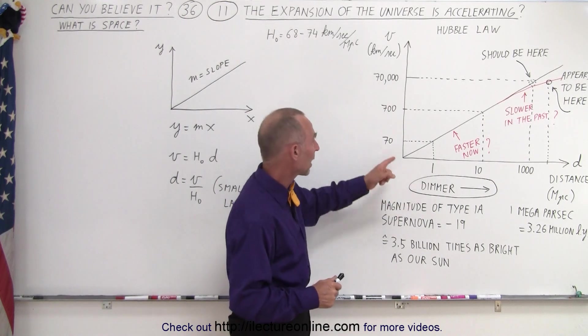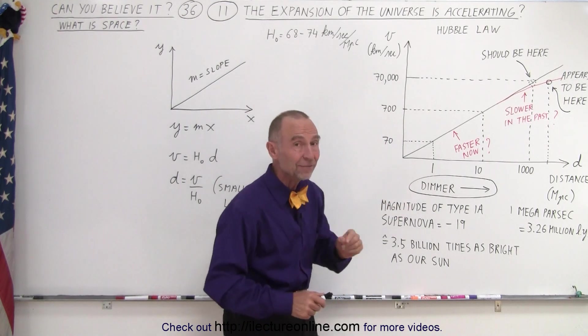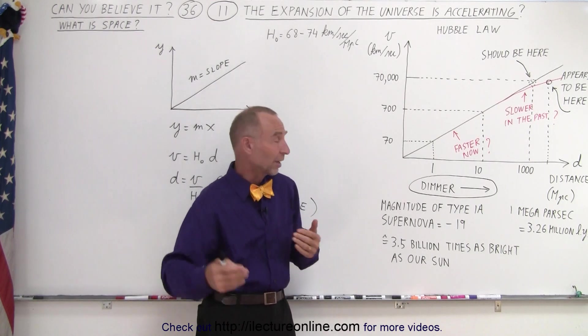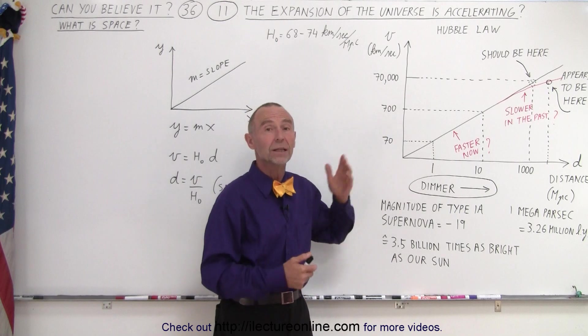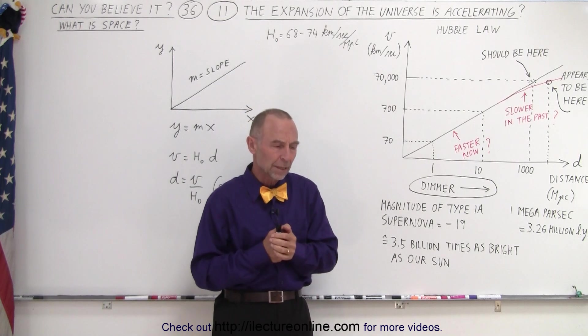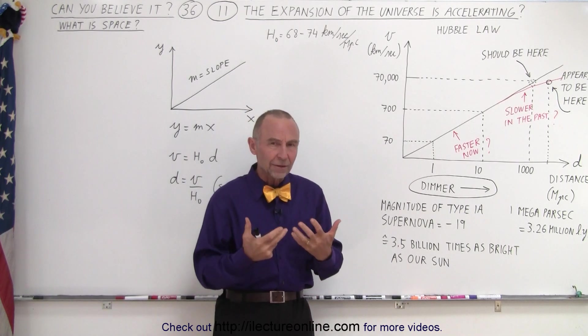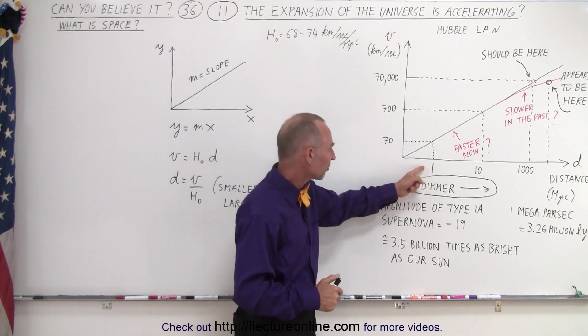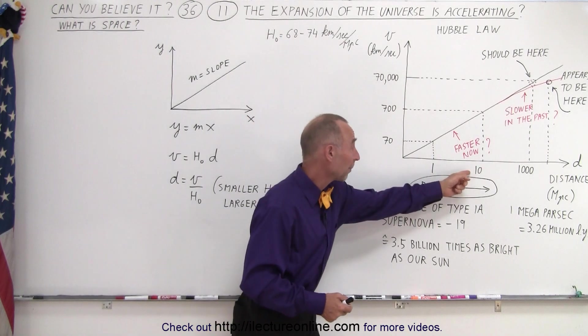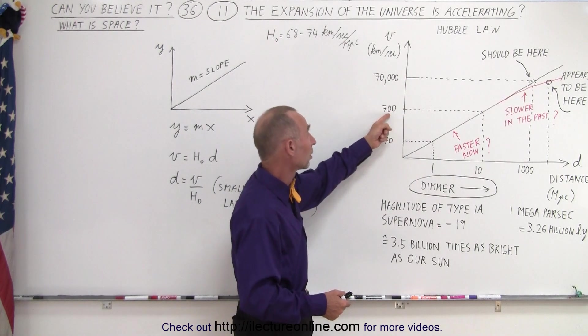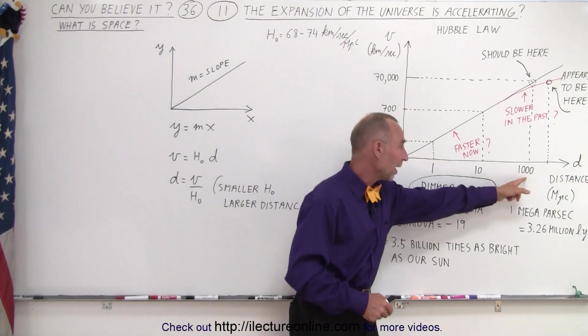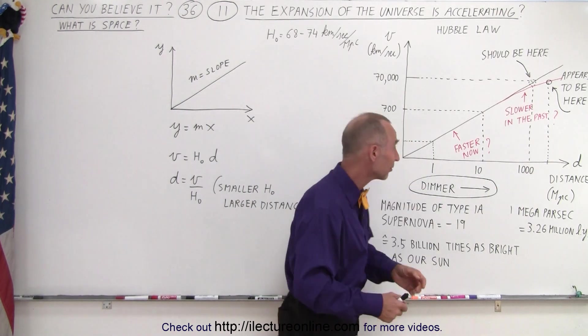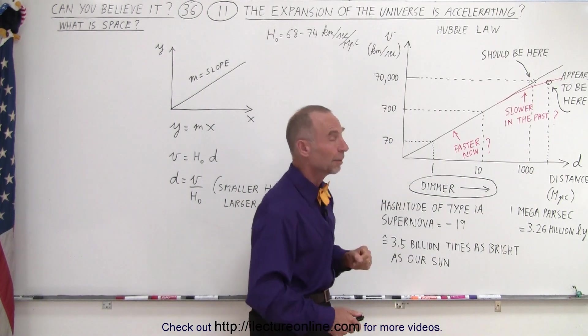Galaxies that far away would be traveling at 70 kilometers per second. Galaxies twice as far away, like two megaparsecs, would be traveling at 140 kilometers per second. For 10 megaparsecs, it would be 700 kilometers per second. For a thousand megaparsecs—more than 3 billion light years—that would be 70,000 kilometers per second.